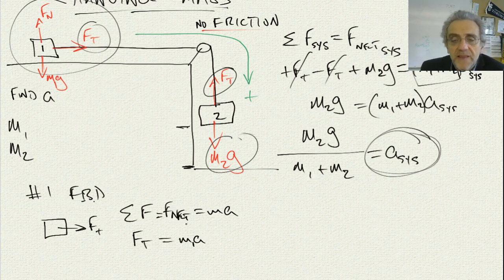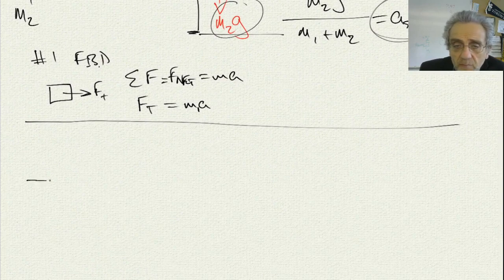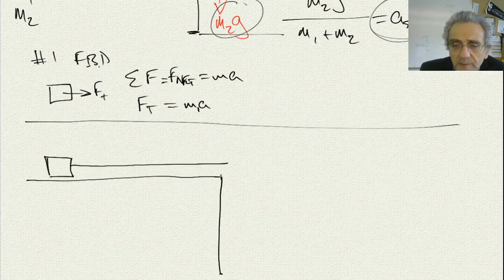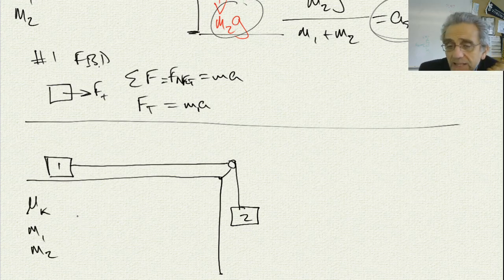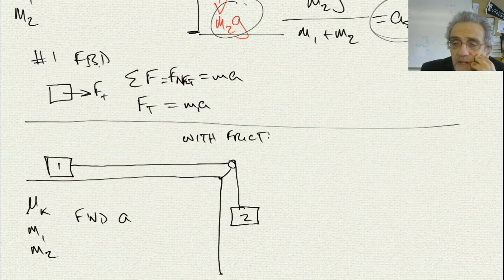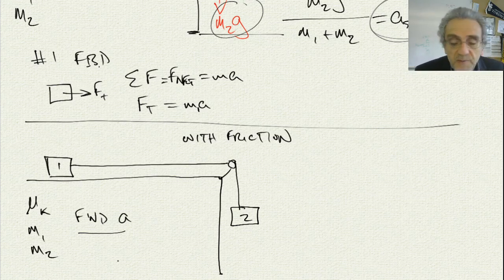Let's try another one. This is the exact same problem — mass number one on the surface, mass number two hanging — but this time we have kinetic friction coefficient mu K, with M1 and M2 given. Find the acceleration again, but this time the hanging mass problem includes friction. Go ahead and pause the video and see if you can find the equation for the acceleration using the method from the previous questions.